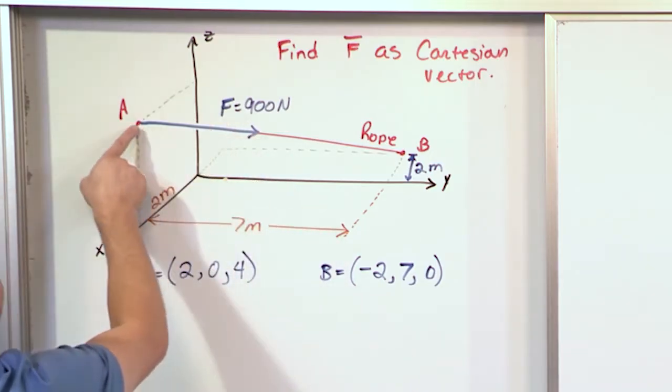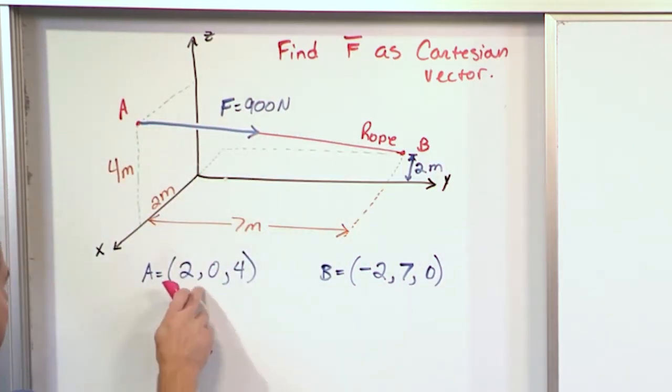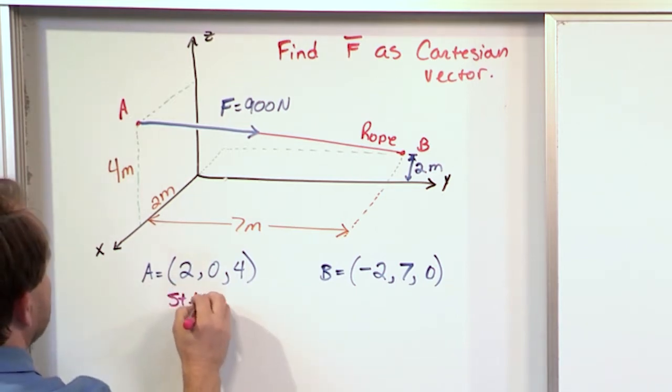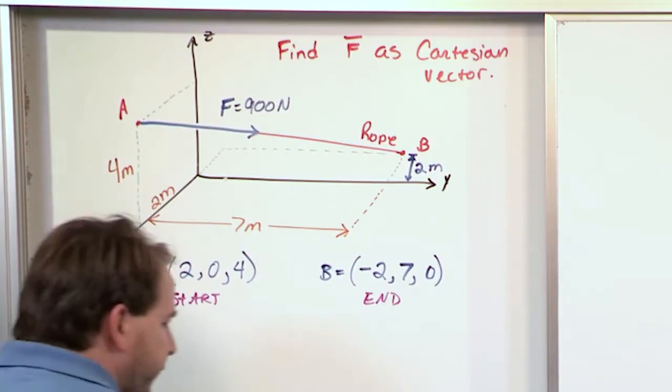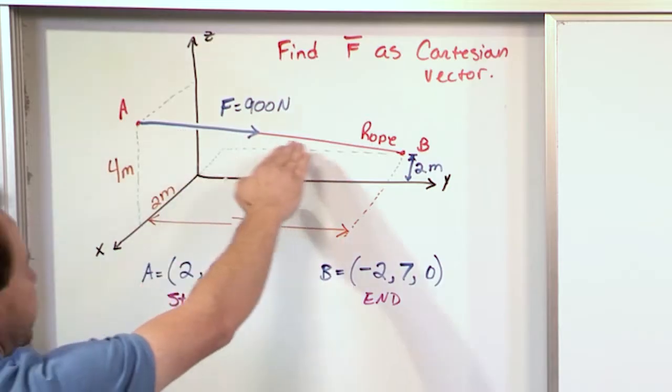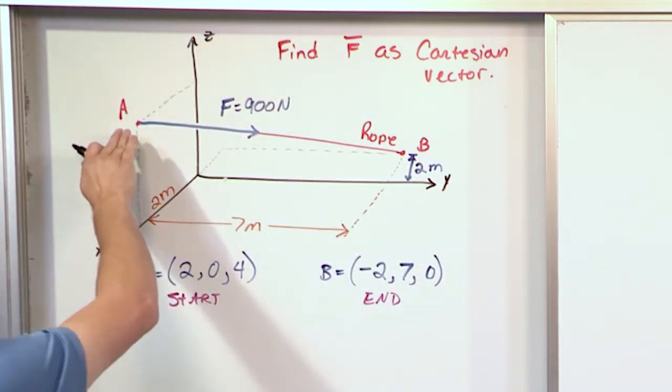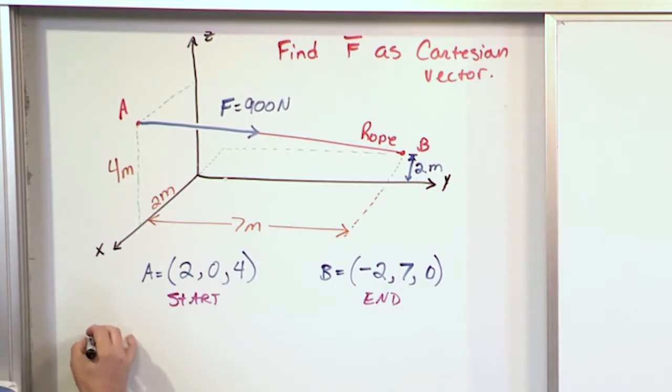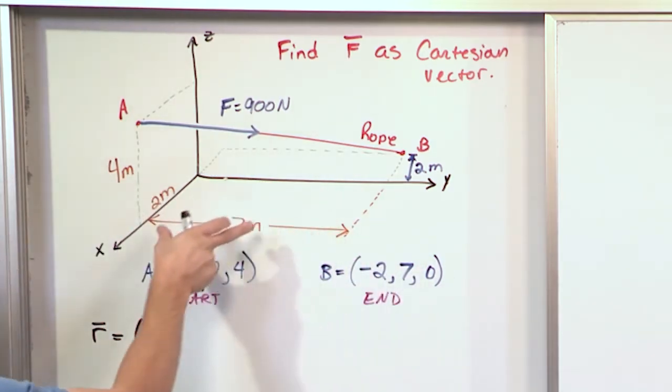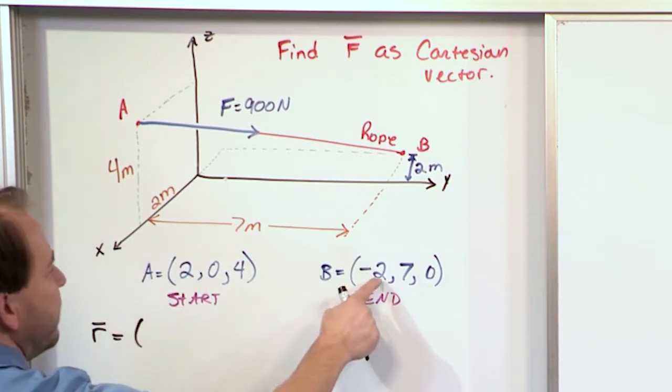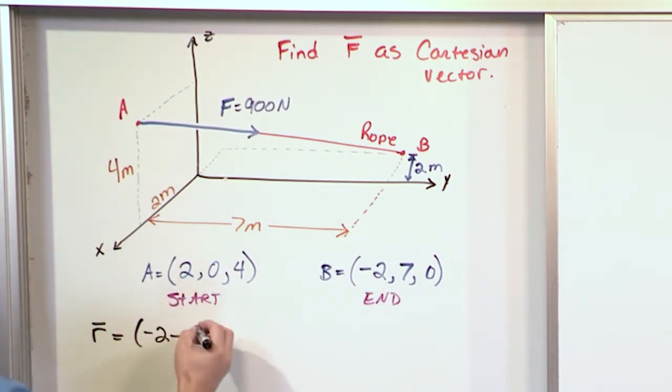Now, because the arrow is pointing from A to B, we're basically starting at point A in terms of defining a direction, and we're ending at point B. So if I wanted to define the position vector that points along this direction here from A to B, that direction vector, or that position vector is labeled R. And it's going to be the difference in the X components, the difference in the Y components, and the difference in the Z components. But the way we do the subtraction is we always start at the ending point.